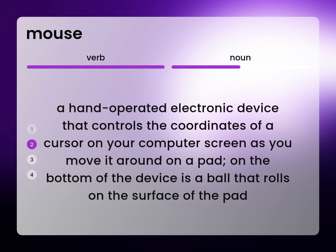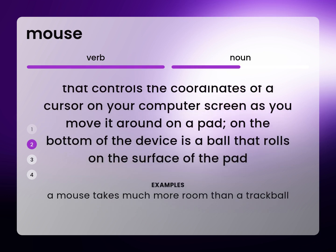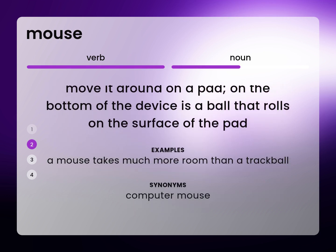A hand-operated electronic device that controls the coordinates of a cursor on your computer screen as you move it around on a pad. On the bottom of the device is a ball that rolls on the surface of the pad. A mouse takes much more room than a trackball. Computer mouse.